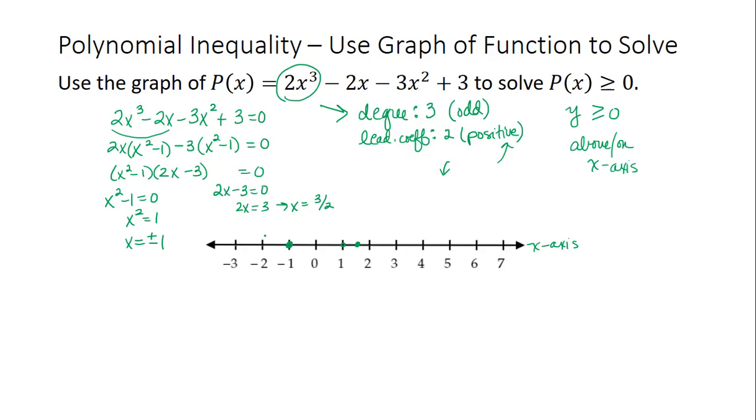So at the leftmost zero of -1, the graph goes down to the left of that. And it goes up after the rightmost zero of 1.5.